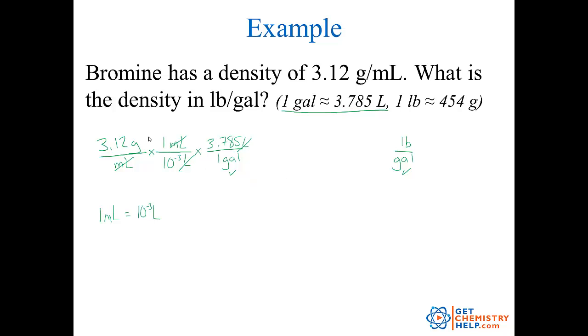Now I got to do grams into pounds. Well, it gives me a conversion factor that says one pound is 454 grams. Now grams are on top. So in order for grams to cancel, the gram part of the conversion has to go on the bottom. 454 grams on bottom, which means one pound goes on top. So now grams cancels and look, I got pounds. So there I am. I'm in pounds per gallon.